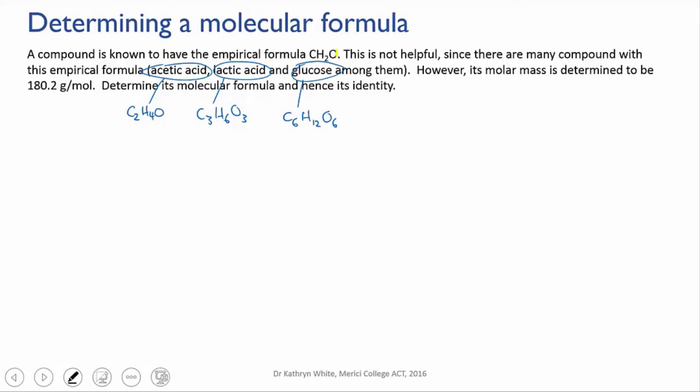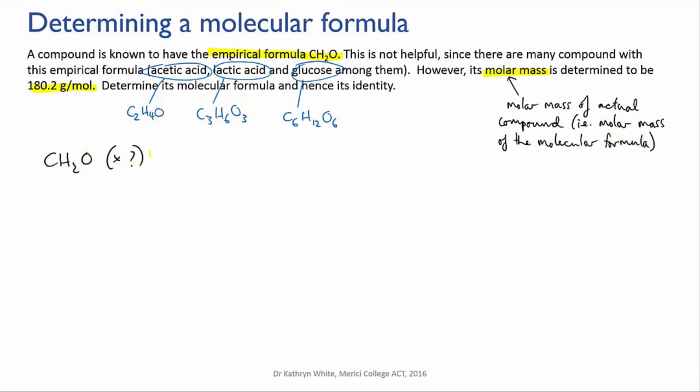Okay, so first write down what you know. We know that the empirical formula is CH2O, and we know that the molar mass of the molecular formula, the true formula, is 180.2 grams per mole. What we need to discover is what factor should we multiply the empirical formula by to get the molecular formula.